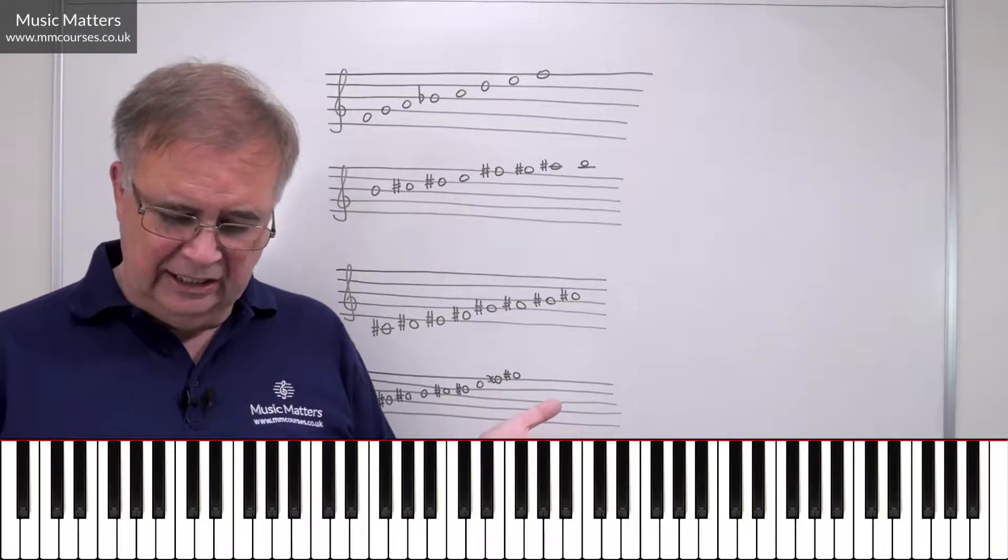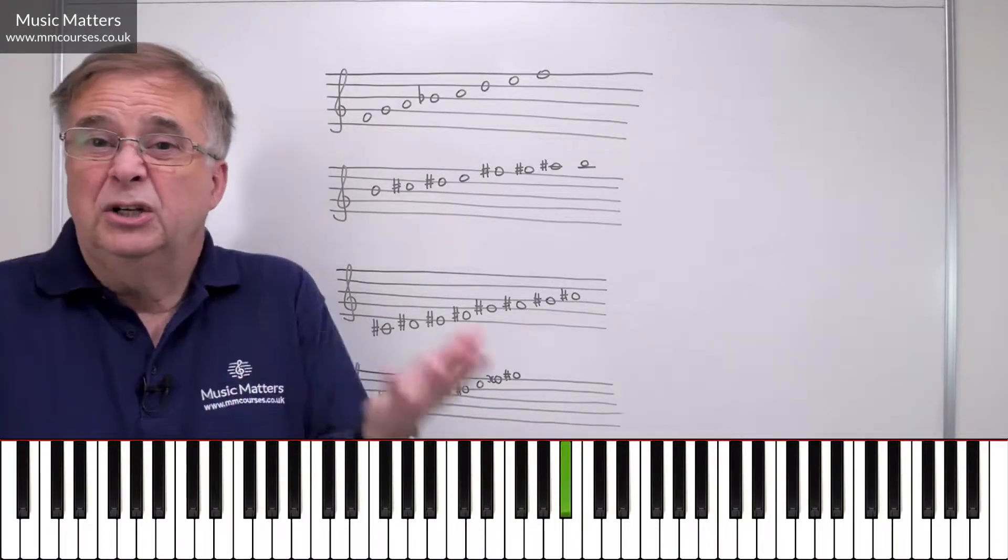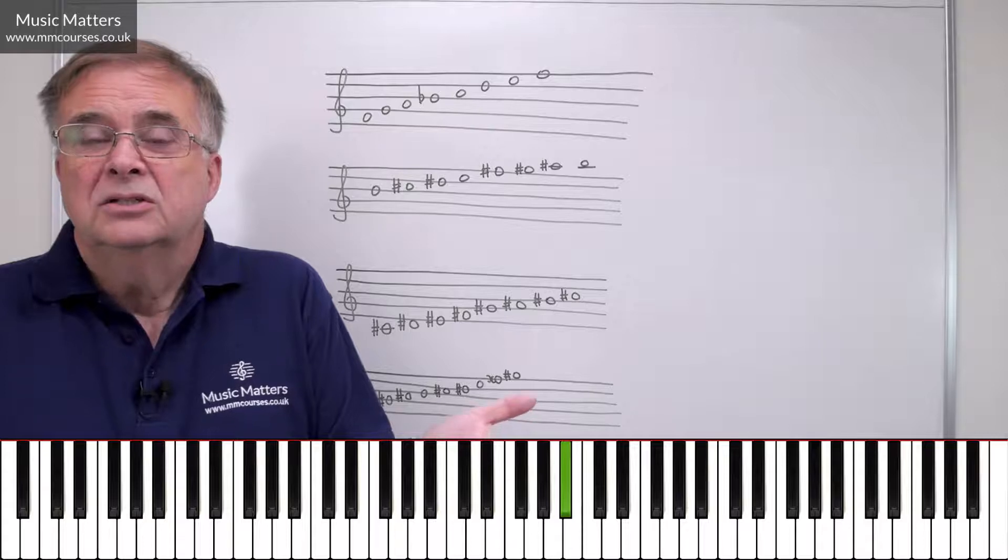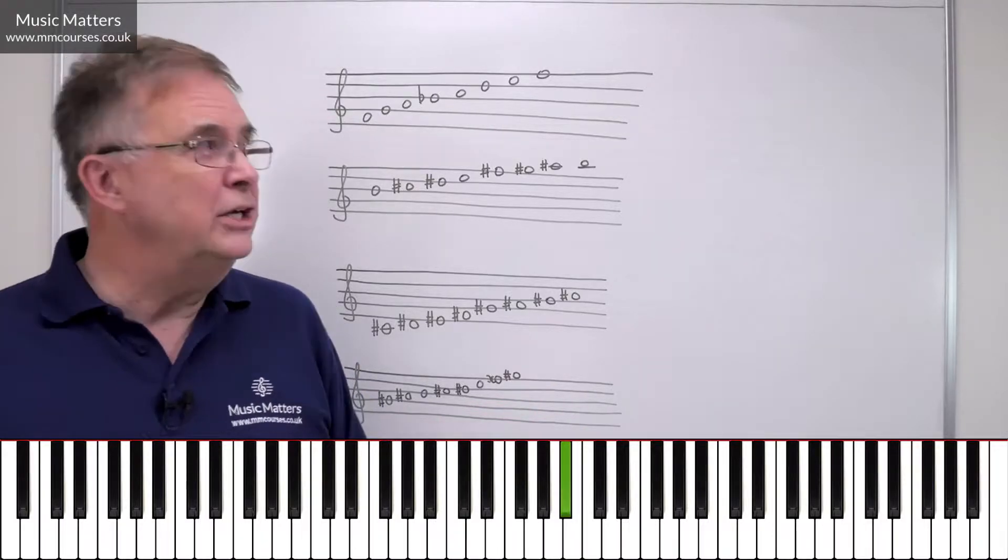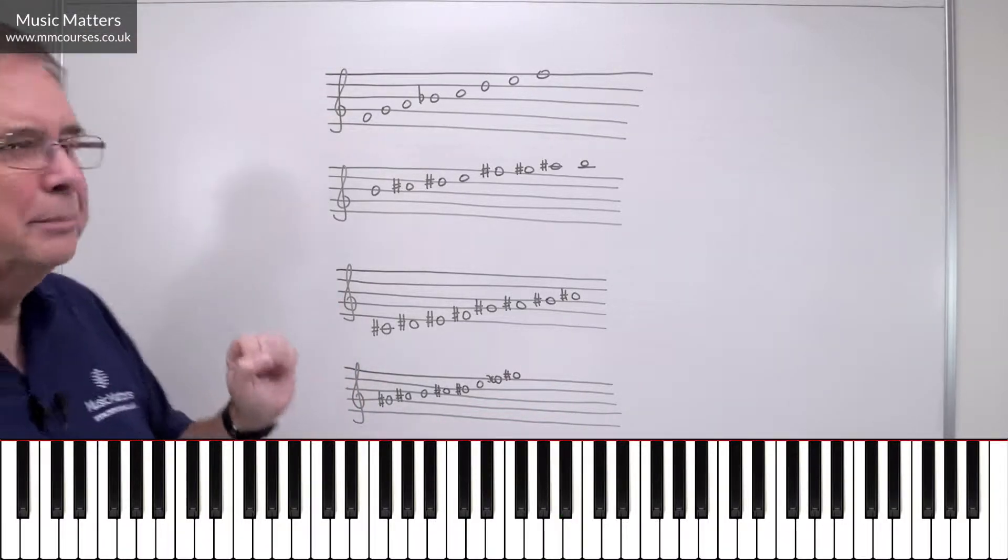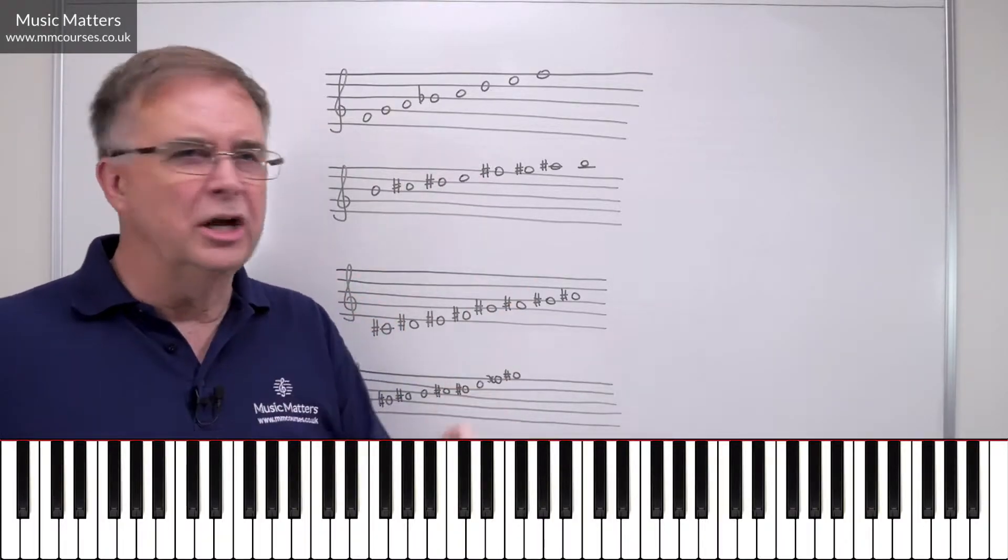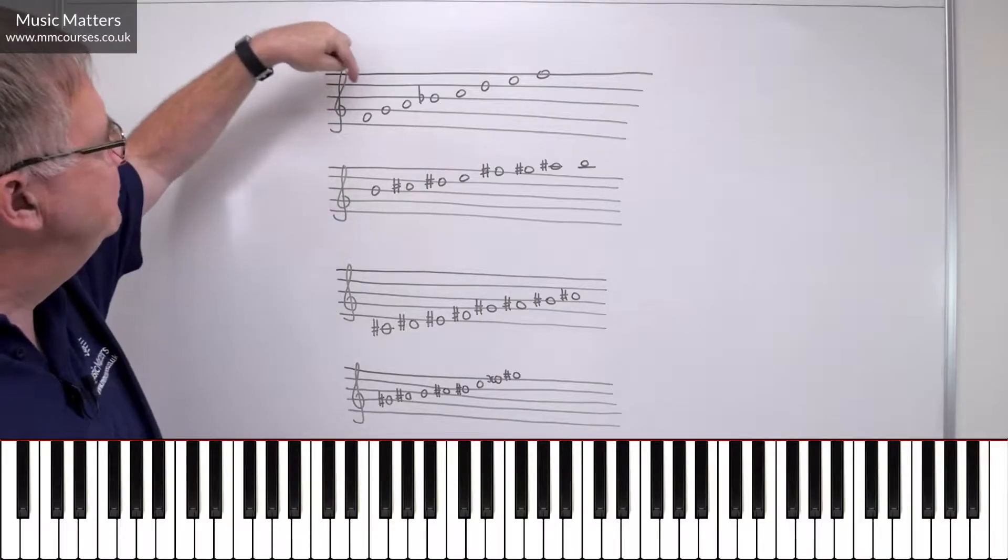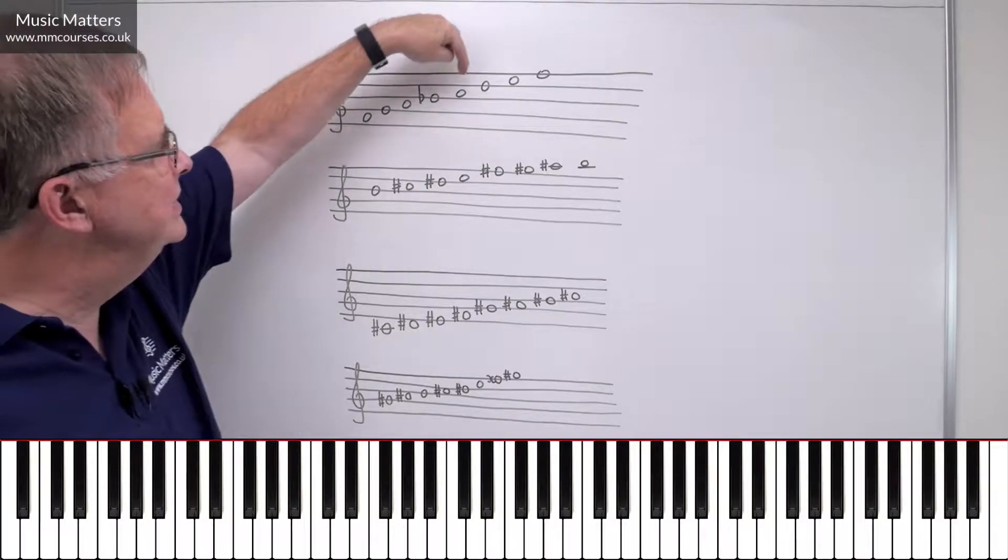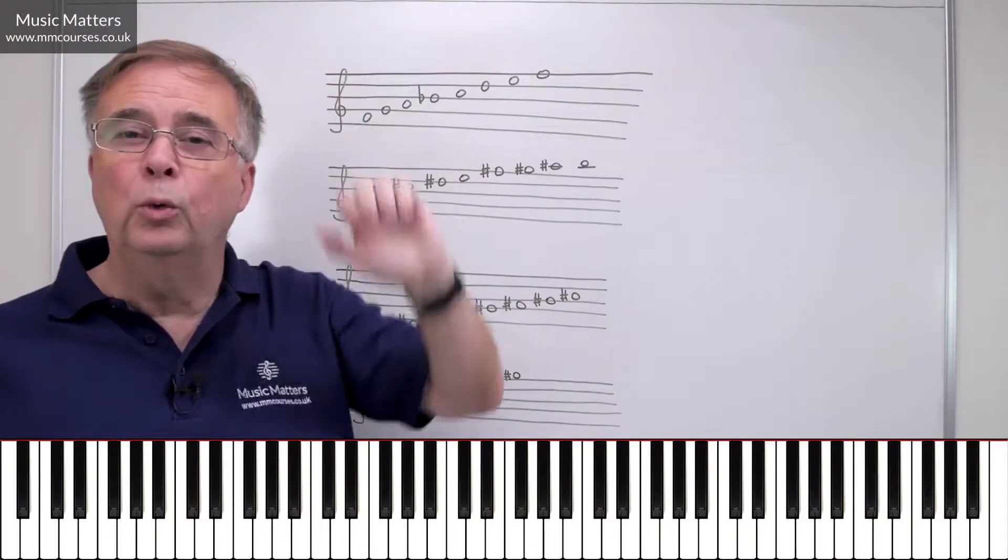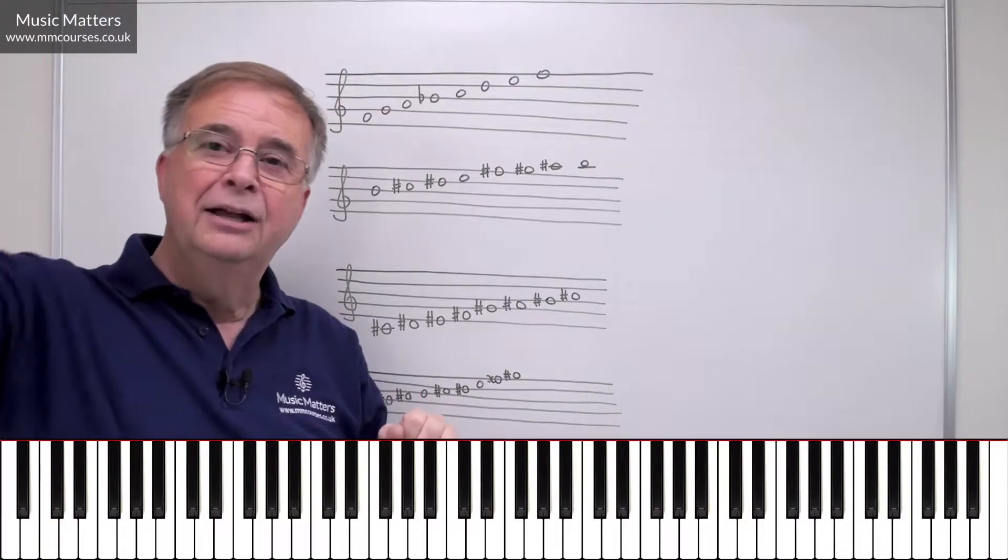Because thinking through what we've just said, this note is B-flat, but it could be A-sharp, couldn't it? So why don't I call it A-sharp? Well, if you think about it, in any scale, you have one of each letter. So before we think about sharps and flats, we've got F, G, A, B, C, D, E, F. So we've got one of each letter starting on F, finishing on F.